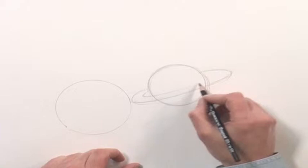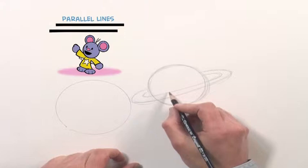And then to make it dimensional, we'll put another line just like this next to it, running parallel to that line.